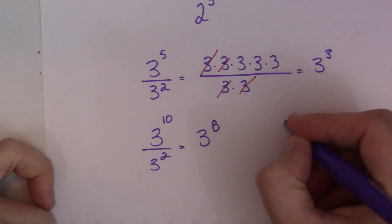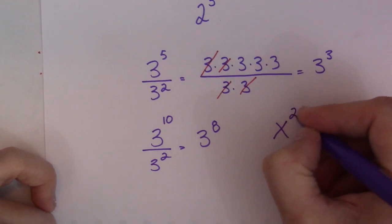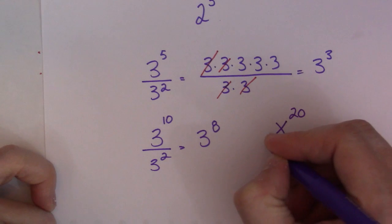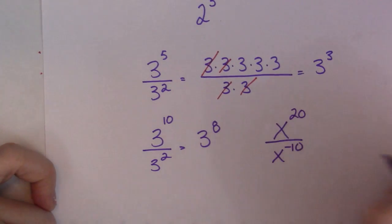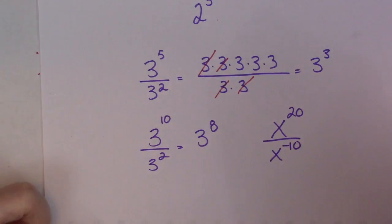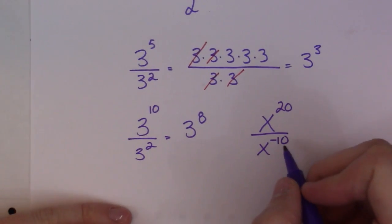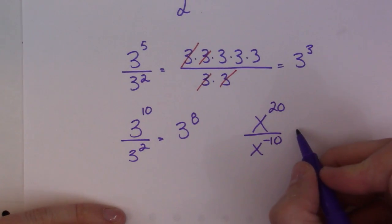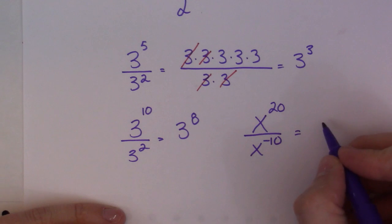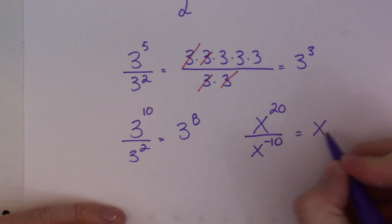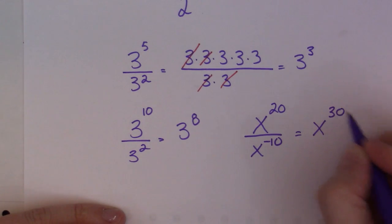Let me try another one. X to the 20 divided by X to the negative 10. This is where you've got to be careful when you have a negative exponent, especially in the bottom. So that's going to be 20 subtract negative 10, so that becomes X to the 30.